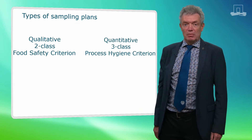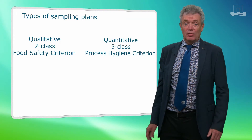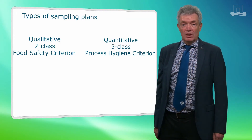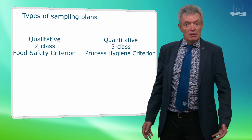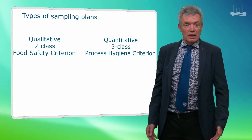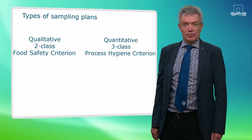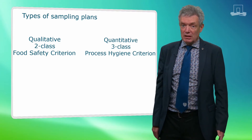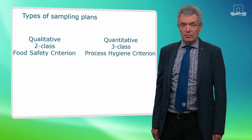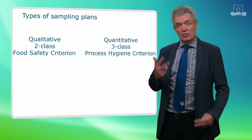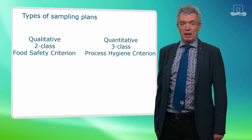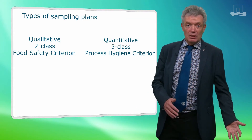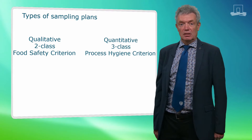There are different types of sampling plans. We have qualitative and quantitative tests. In a qualitative test we use enrichment to detect culturable cells in a sample. In a quantitative test the number of cells present is counted. We also have two- and three-class sampling plans, and we can use them as food safety criteria or as process hygiene criteria.